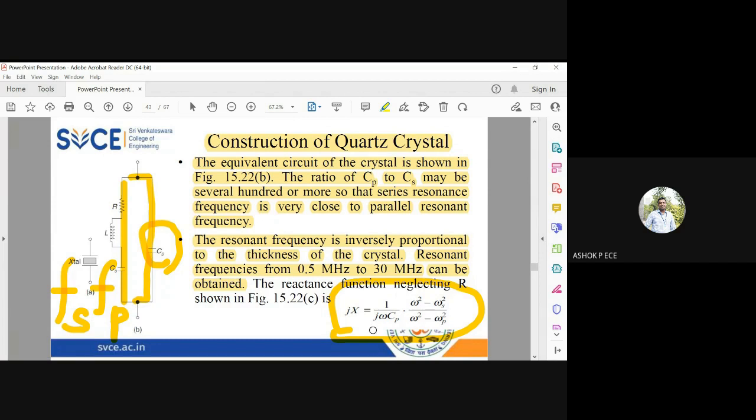From this equation you find that if you put omega equal to omega s, reactance is zero. So at the series resonating frequency, the crystal is going to provide zero reactance. When omega equal to omega p, the reactance is infinity. So at parallel resonating frequency, the reactance is infinity.